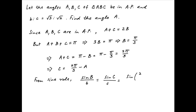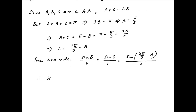On the right-hand side, replacing C with 2pi upon 3 minus A, we get sine of 2pi upon 3 minus A divided by c. This implies that sine of 2pi upon 3 minus A is equal to c upon b times sine B. On the right-hand side, we have determined that B is equal to pi upon 3.